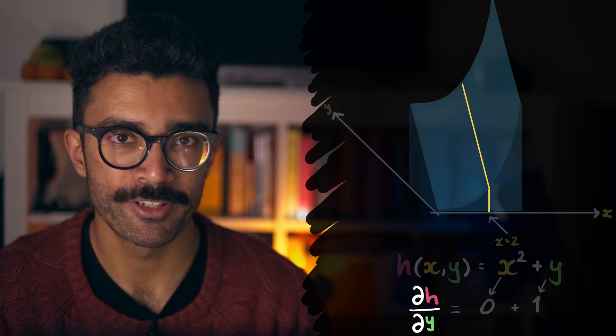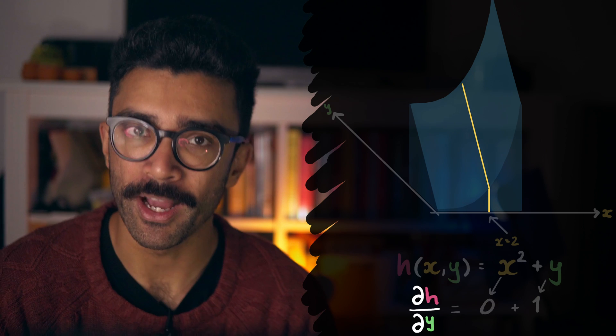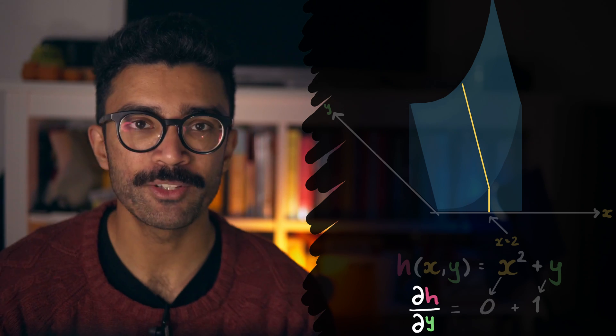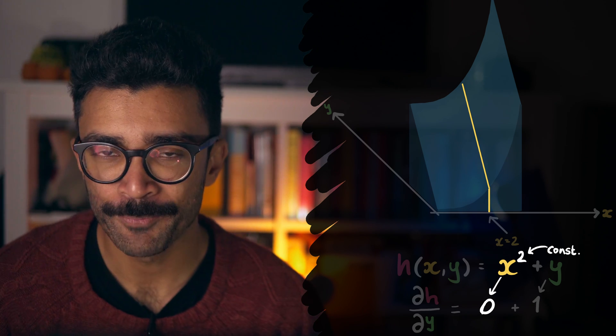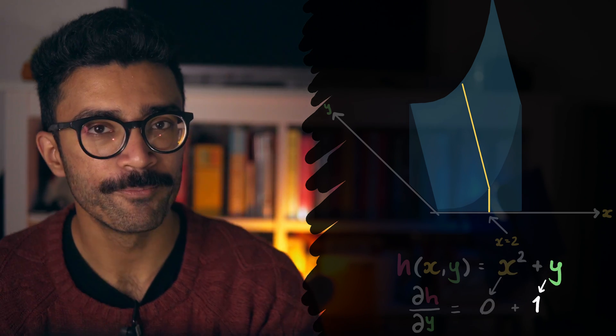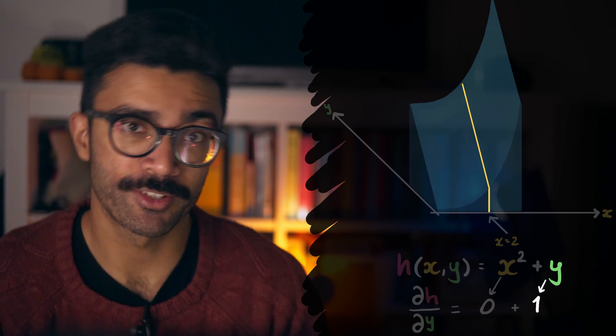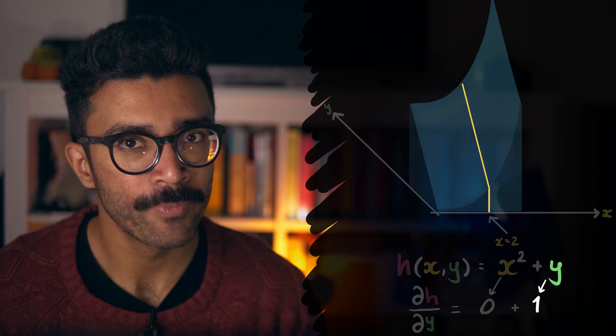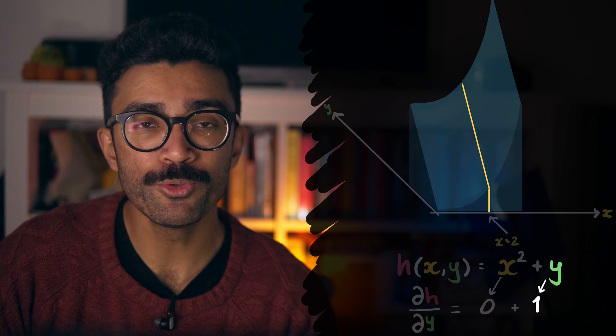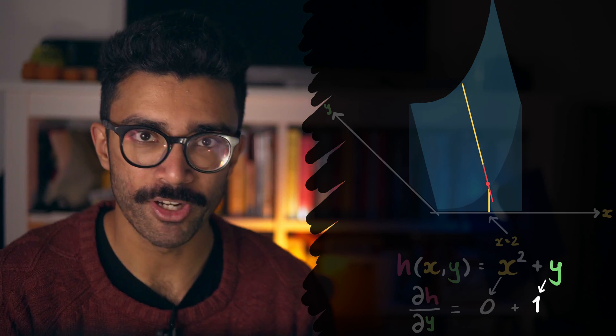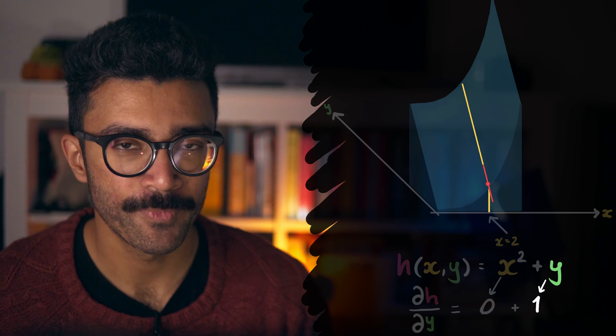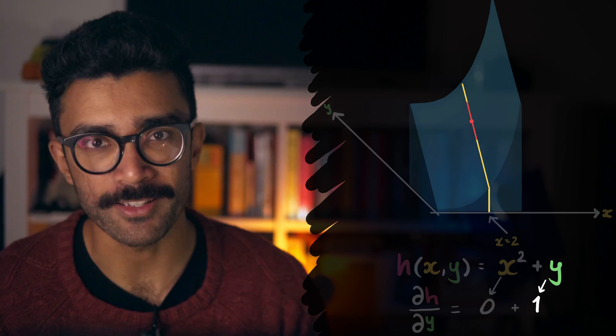Similarly, we can find the partial derivative of h with respect to y. Mathematically, this means we keep x constant, meaning x squared is also constant. The only thing we need to differentiate here is y. The derivative of y with respect to y is simply 1. What this means is that once we choose our constant x value, the slope of the surface is 1, regardless of what y value we're at. The slope is constant all the way along, which makes sense. The gradient does not change as we move from here to here, for example.